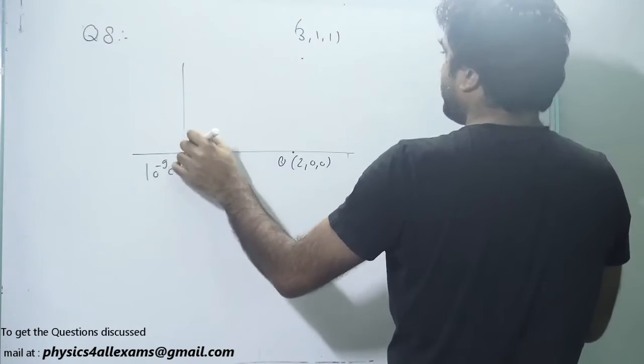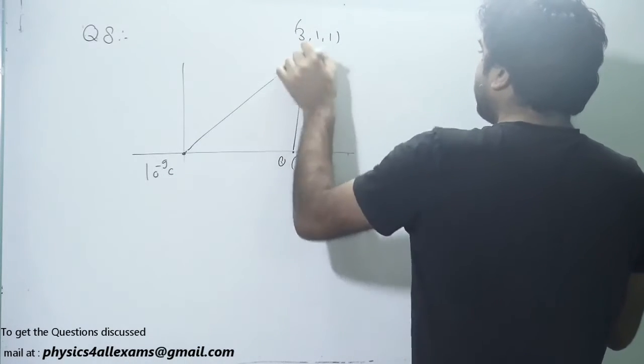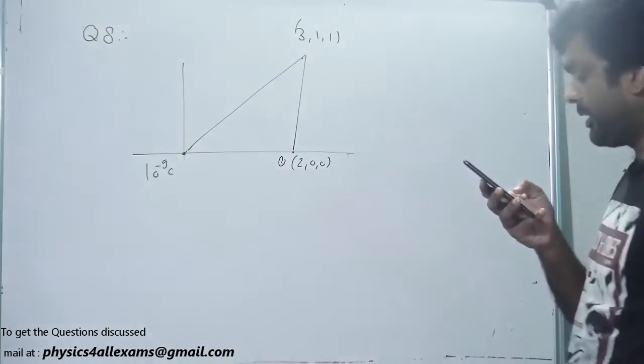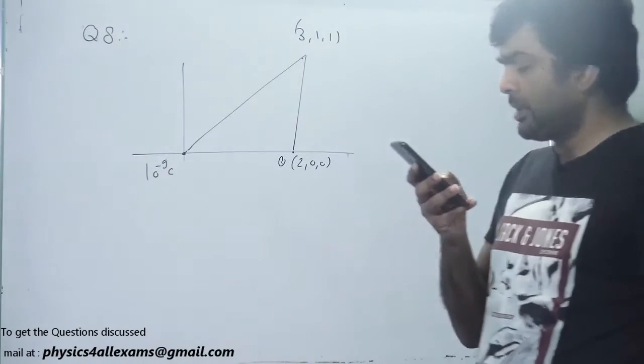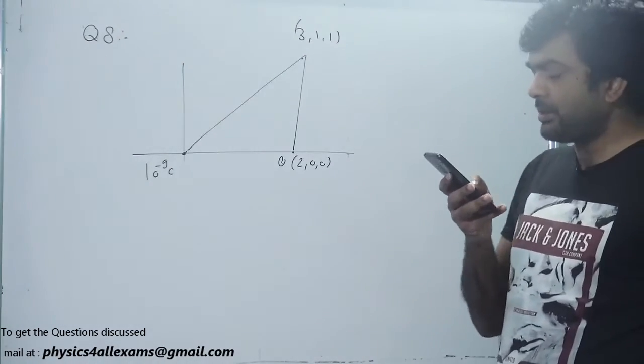the resultant electric field is 0 at this point. Calculate the value of Q. Is the y-component 0 at (3,1,1)?